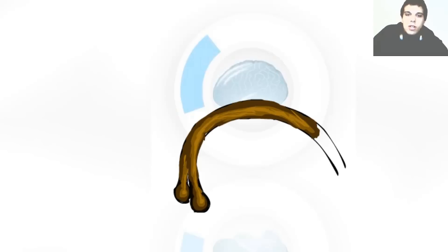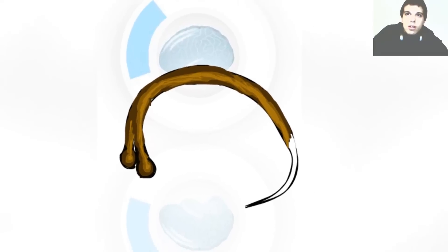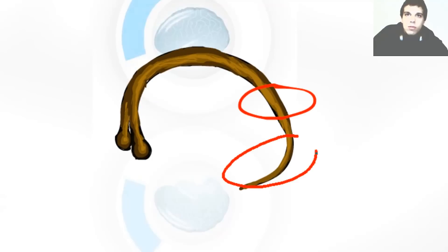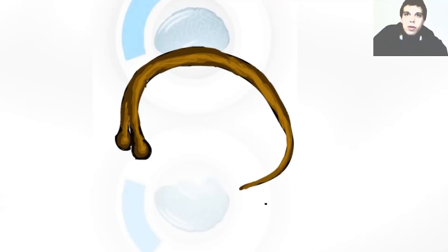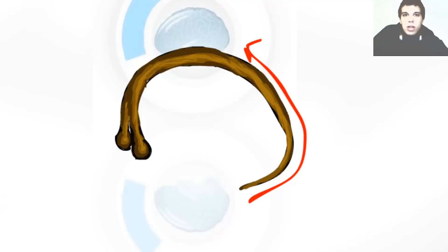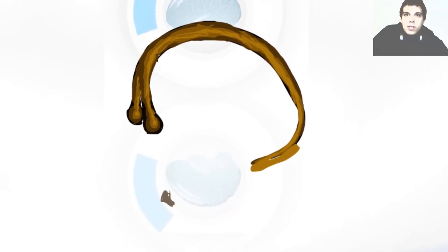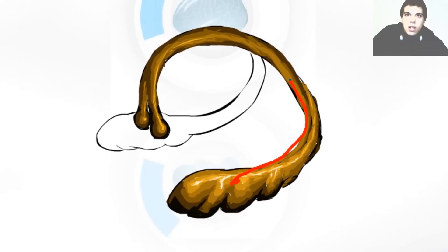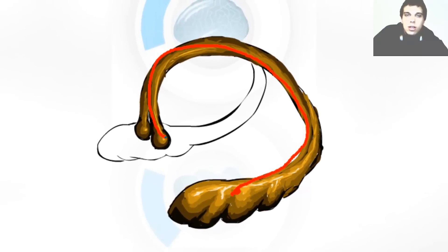Then comes the crus of fornix and the fimbriae. It all goes all the way around. The fornix is a bundle of nerve fibers — the fibers go in this direction. They transfer information from the hippocampus towards the hypothalamus through the mammillary bodies.